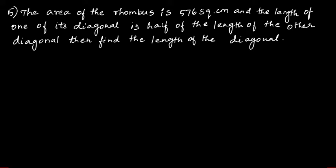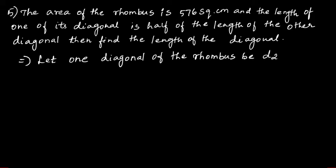Here they have given the area value but not d1 and d2. They said one diagonal is half of the length of the other diagonal, so first write what is given. We will assume one of the diagonal of the rhombus to be d2, so the other diagonal d1 is equal to half of d2.